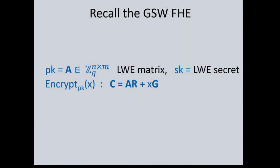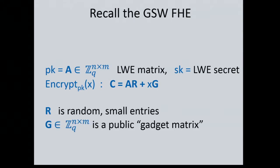Let's start with the GSW — the Gentry-Sahai-Waters FHE scheme. Here's a cheat sheet of what you need to remember. The public key is some matrix A, it's an LWE matrix, so the last row is a close-to-linear combination of the previous rows, and the secret key is just the LWE secret — the coefficients of this linear combination. To encrypt a bit X, the ciphertext is A times R plus XG, where R is a random matrix with small entries — it could be a 0-1 matrix or small Gaussian — and G is the gadget matrix, the powers-of-2 matrix.